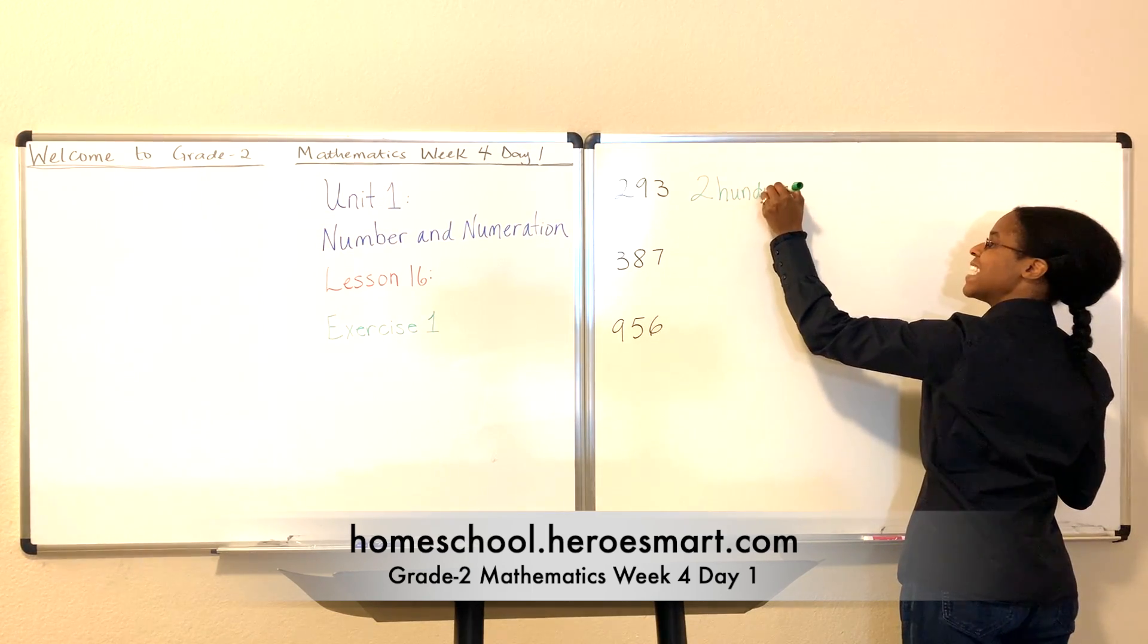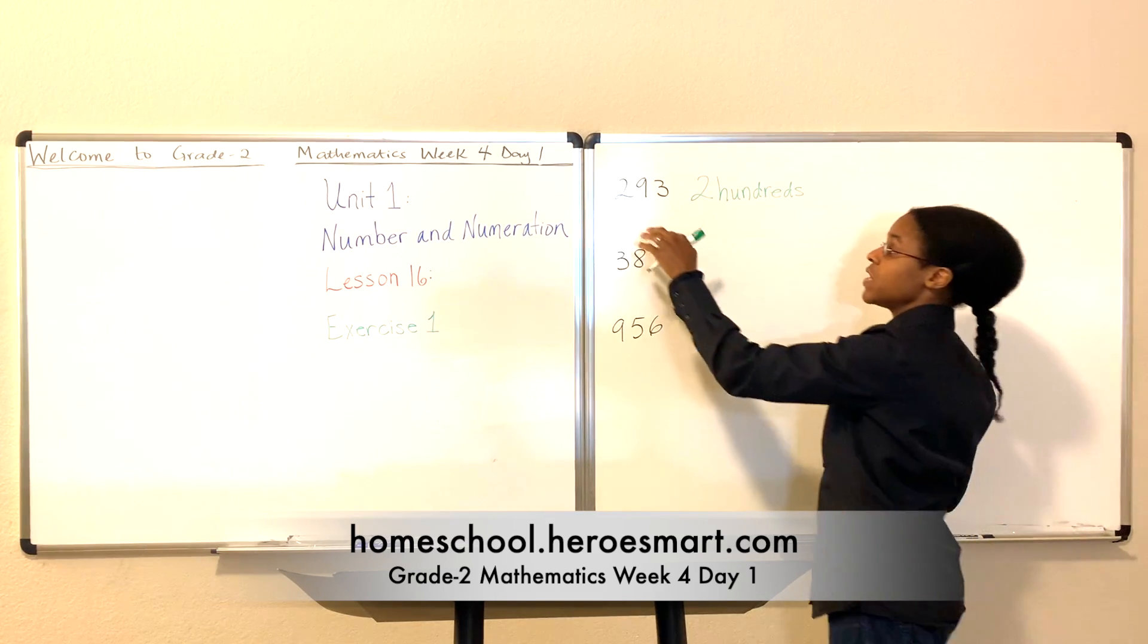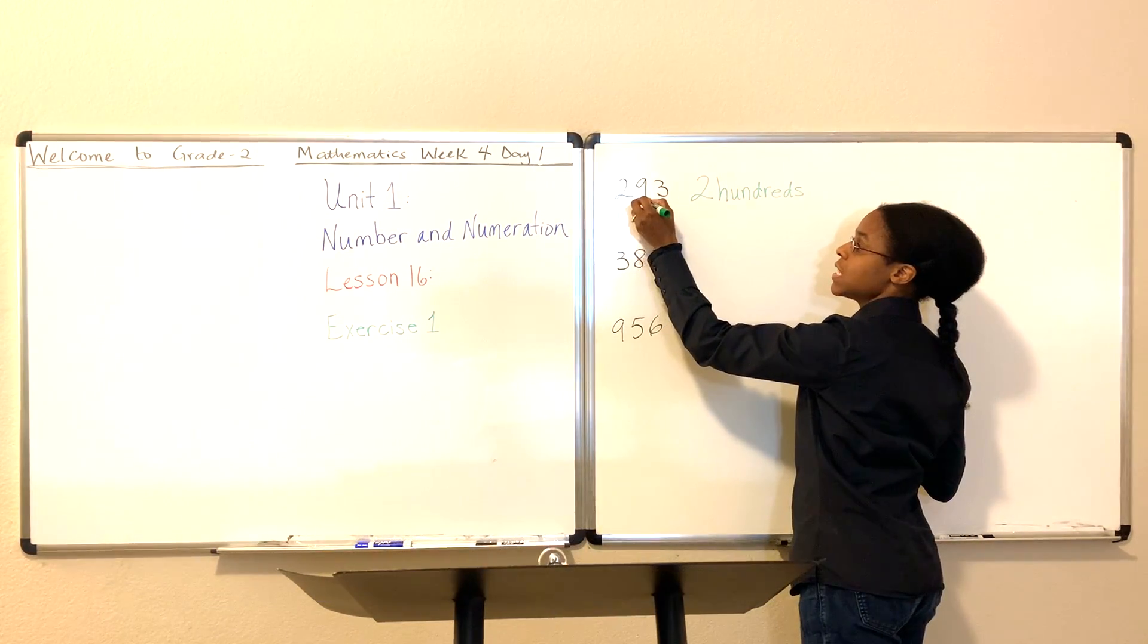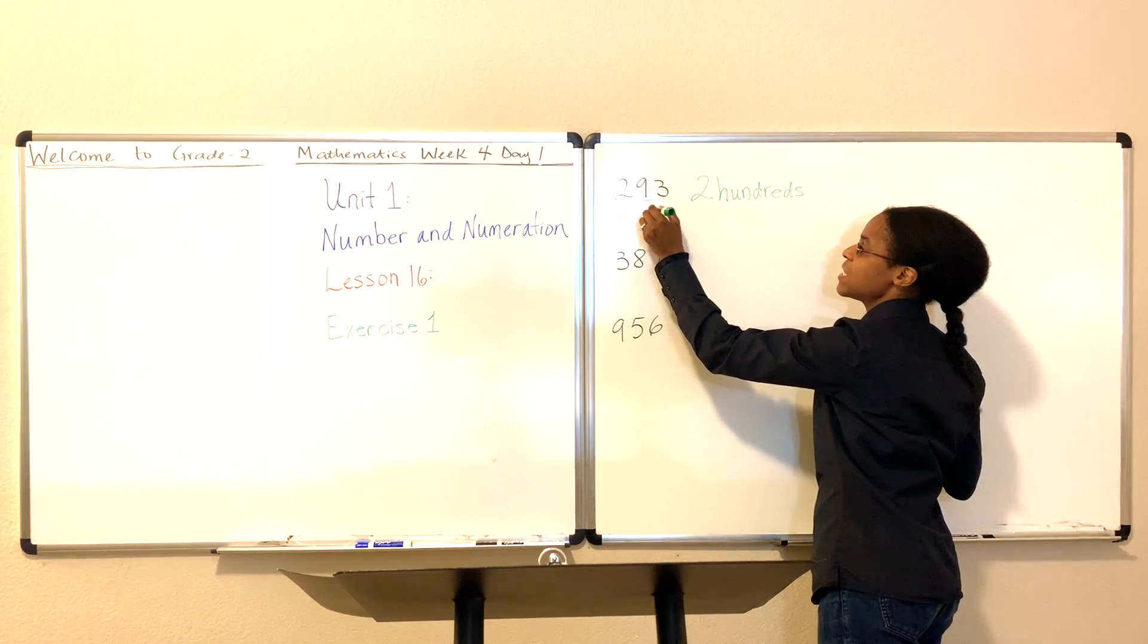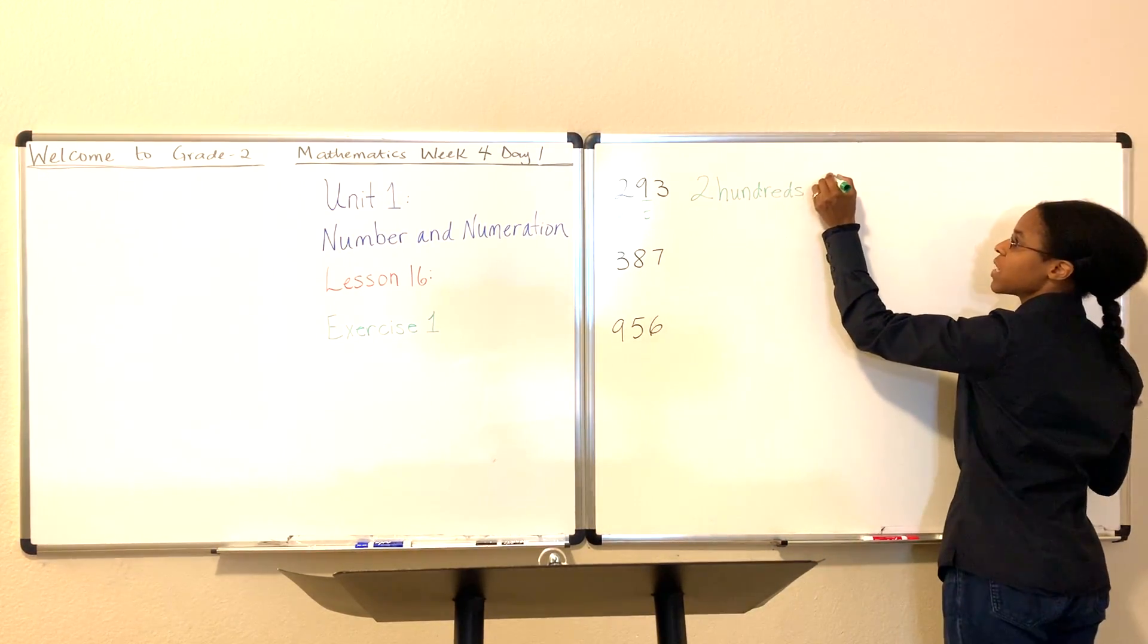And how many tens do we have in the number 293? Well, if this is the hundreds place, then the tens place is right after. That's right. The tens place is right after the hundreds. So we have nine tens. Let's write that as well. Nine tens.